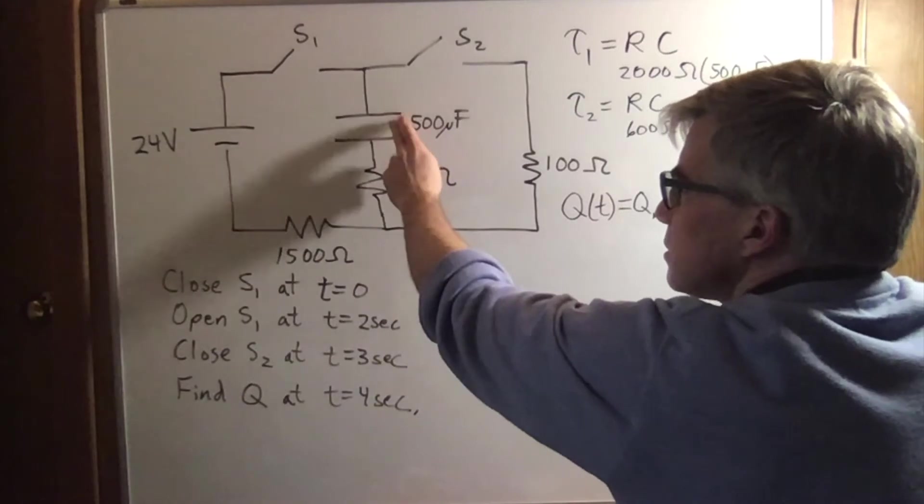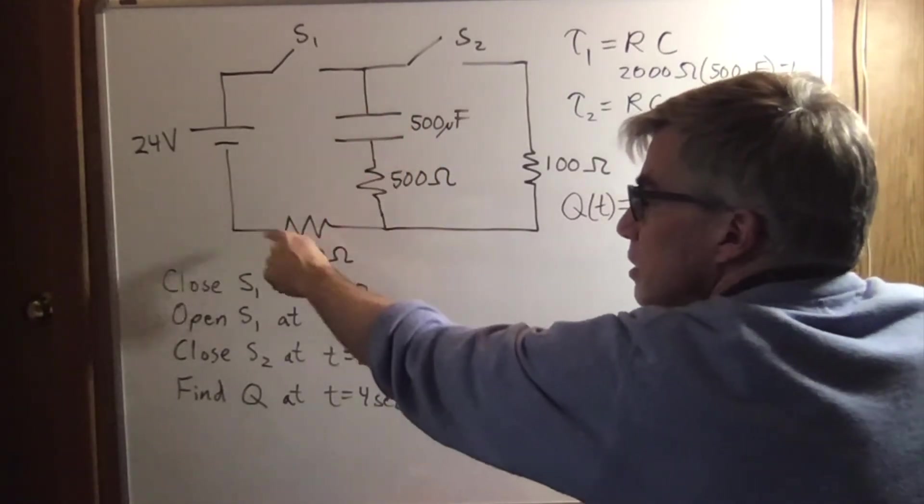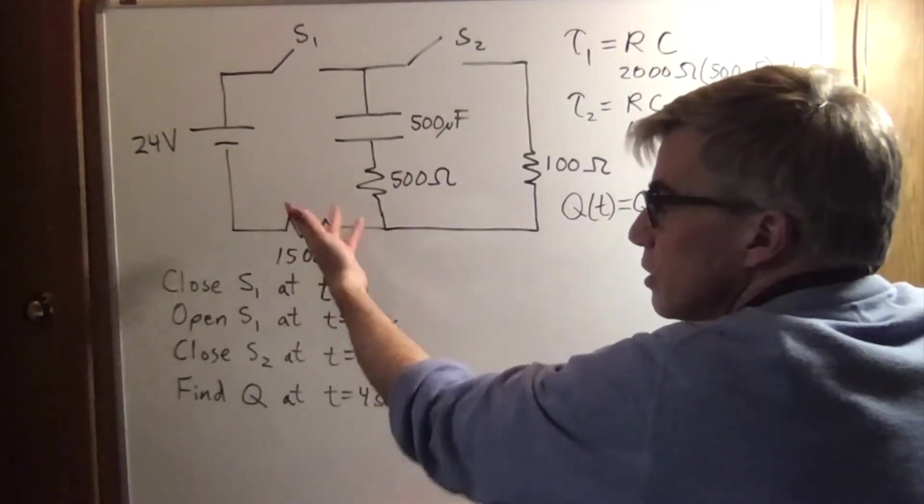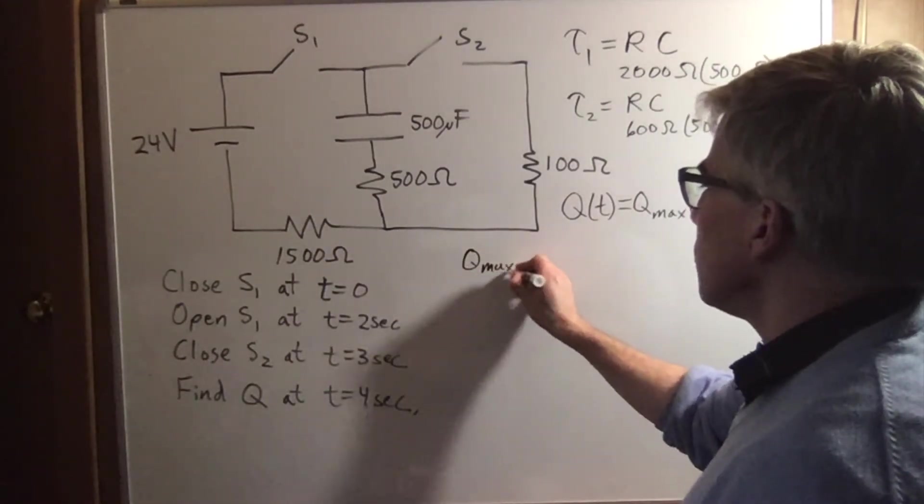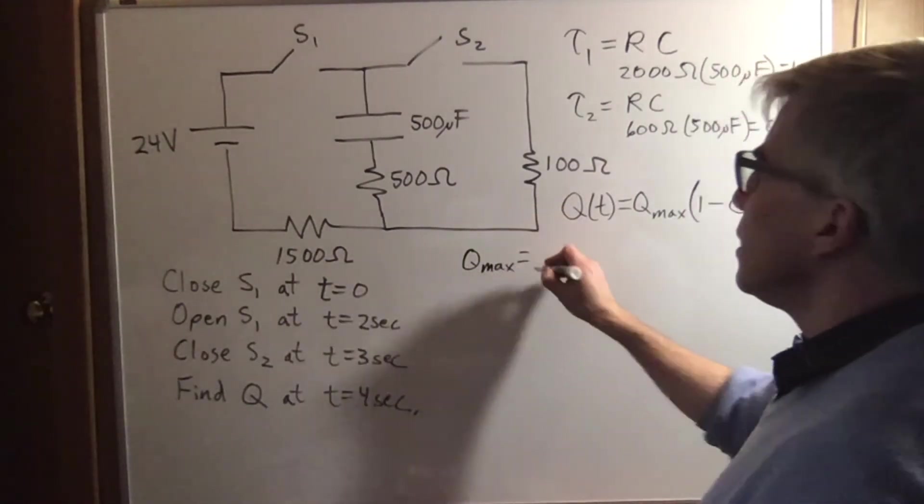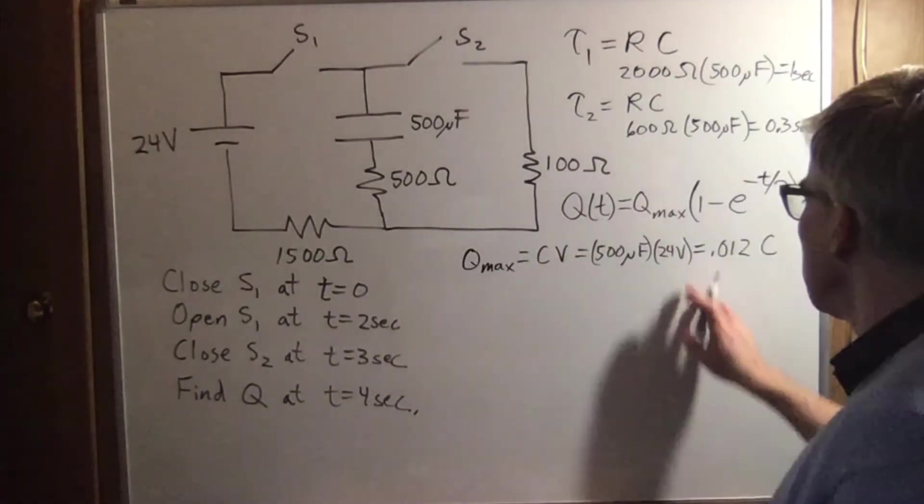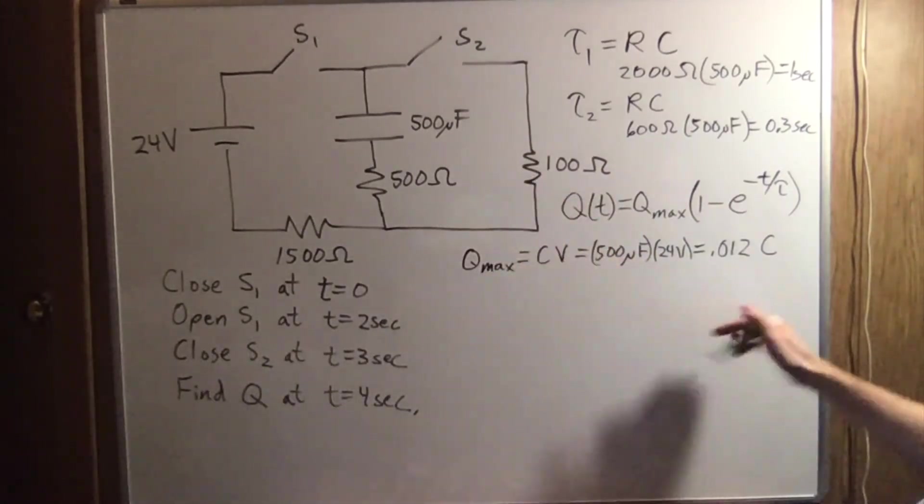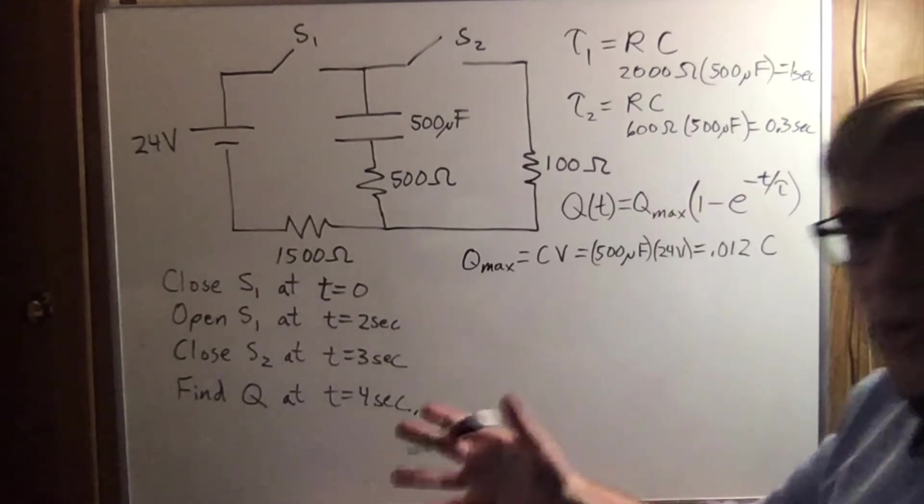That would mean that this capacitor is getting all 24 volts because if there's no current, there's no volts on the resistors. If there's no current, a resistor might as well be a wire. That means the q max, we're not going to reach it, but the q max is cv, 0.012 coulombs. The maximum charge this could reach if we let it is going to be 0.012 coulombs, but we're not going to let it.